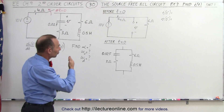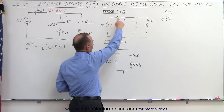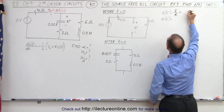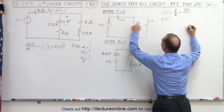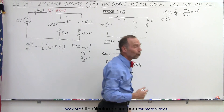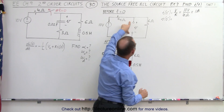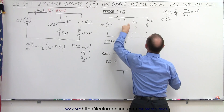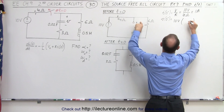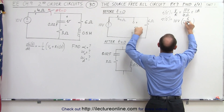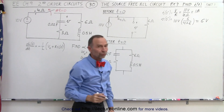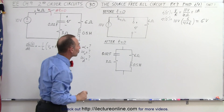The current through the circuit equals the voltage of the source divided by the total resistance, so that's equal to 10 volts divided by 4 plus 6, which is 10 ohms, giving us 1 amp of current. So before time equals 0, there's 1 amp of current. The voltage across the capacitor equals the voltage divider: 10 volts times 6 ohms divided by the total resistance of 4 plus 6, which is 6 volts. So we have the initial current of 1 amp and the initial voltage across the capacitor of 6 volts.